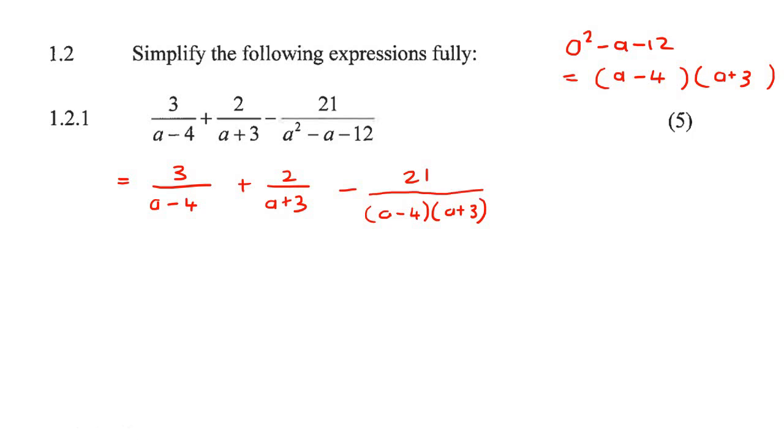So now we can see that we have a common denominator. That lowest common denominator can just be the a minus four and a plus three. That is what our denominator will be. So a minus four and a plus three.